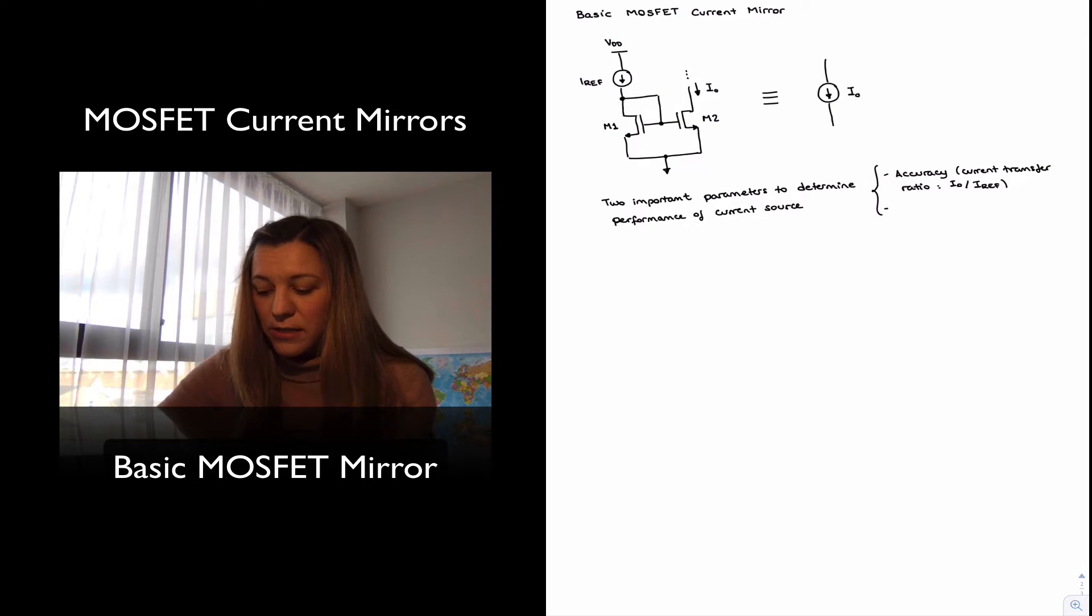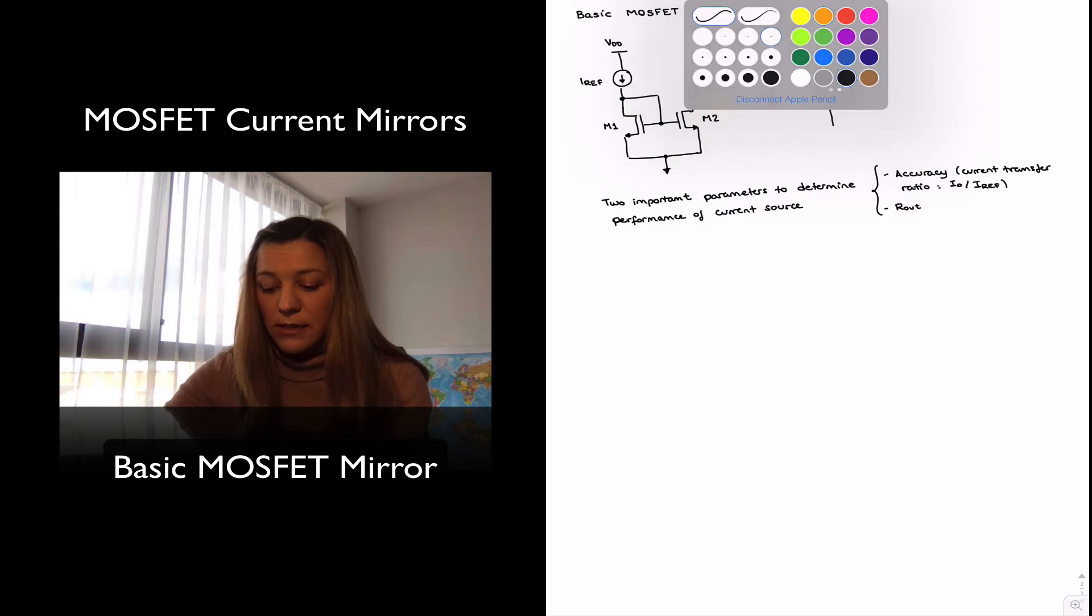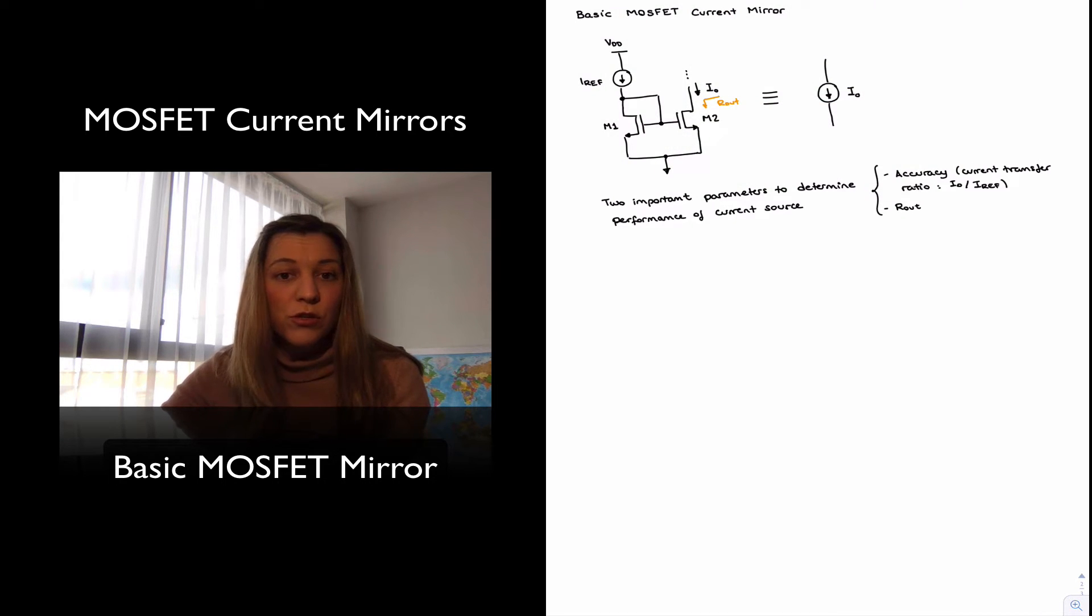And the second parameter is the output resistance of our current source. I'm going to call it R out, which is the resistance basically looking into the output of the current source, because that's going to tell us how susceptible our current source is to loading effects.